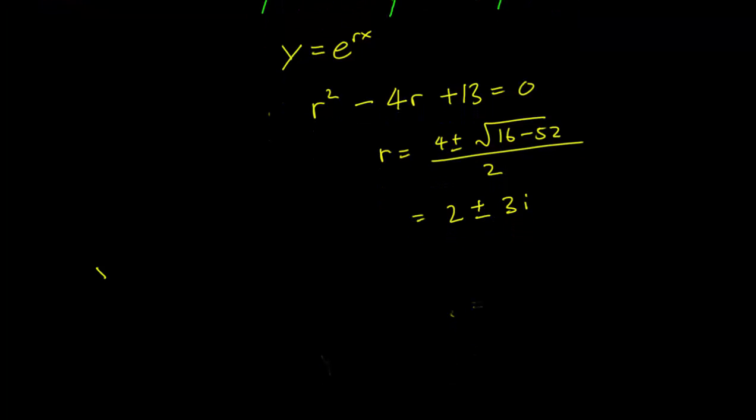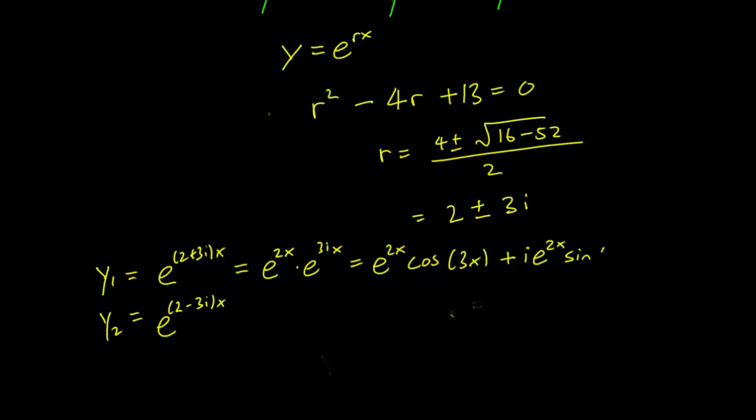So our two solutions are going to be y₁ and y₂ e^(2 plus 3i)x and e^(2 minus 3i)x. We can rewrite this as e^(2x) times e^(3ix). And this in turn can be written down because e^(3ix) is cosine 3x plus i sine 3x as e^(2x) cosine 3x plus i times e^(2x) sine 3x.